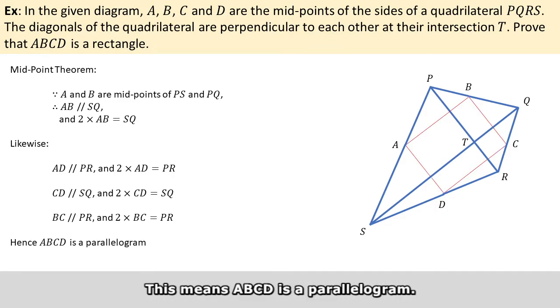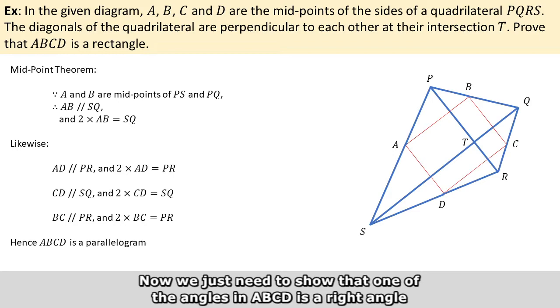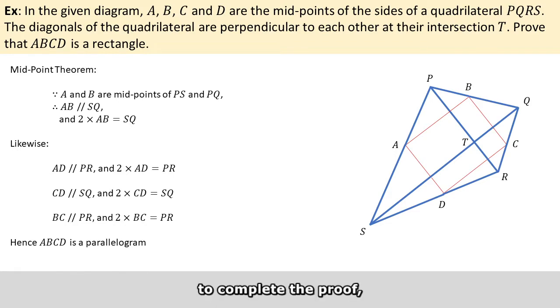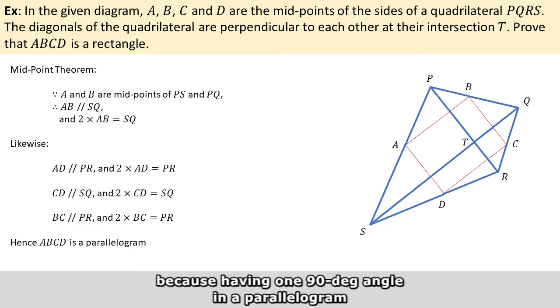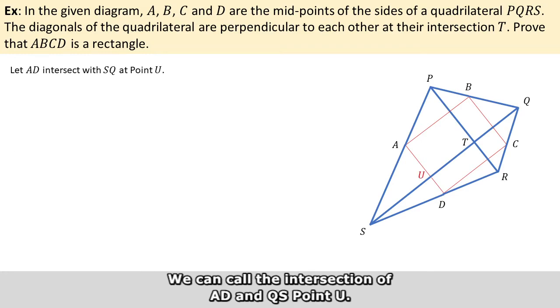This means ABCD is a parallelogram. Now we just need to show that one of the angles in ABCD is a right angle to complete the proof, because having one 90-degree angle in a parallelogram implies that all the angles will be 90 degrees.